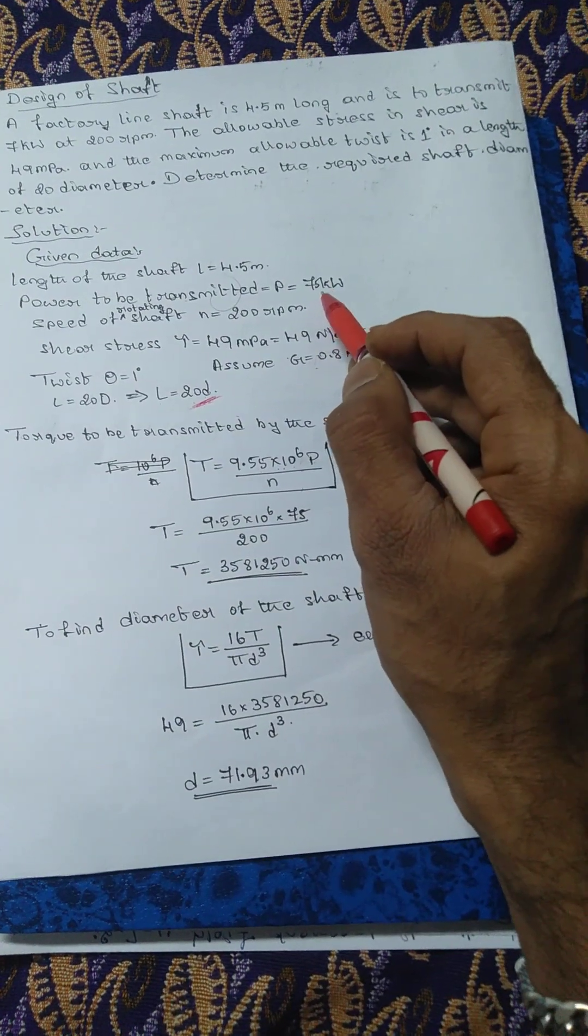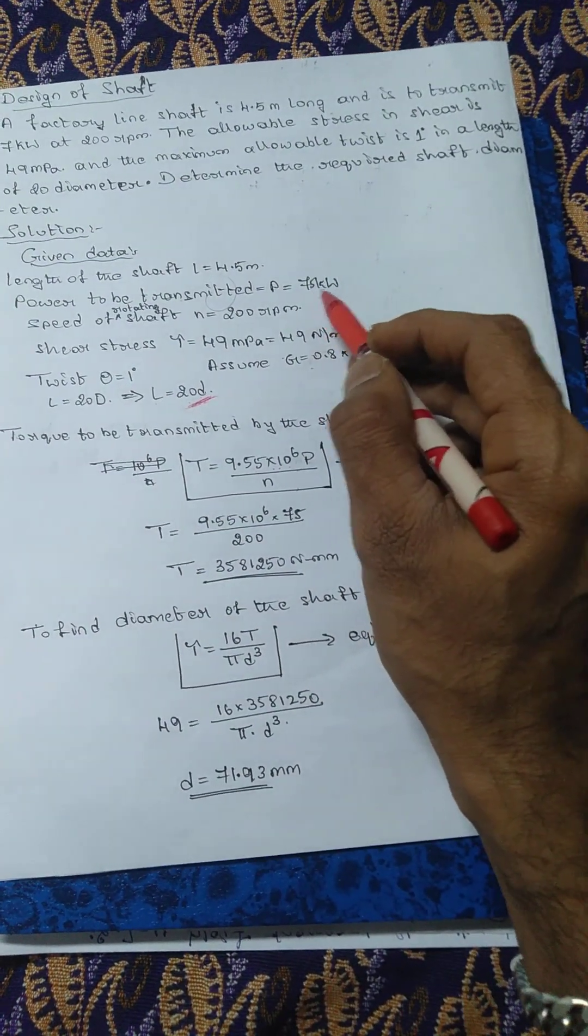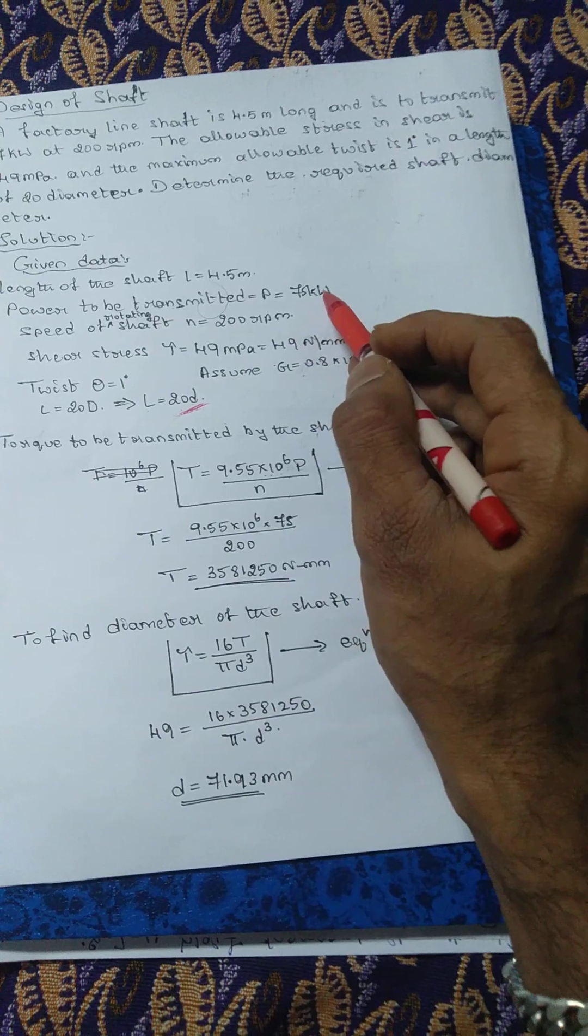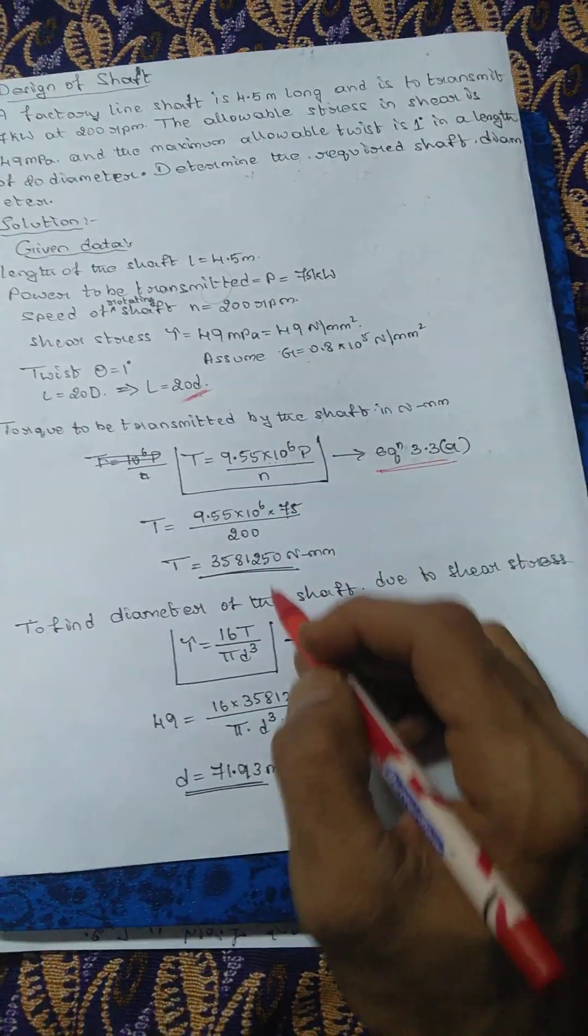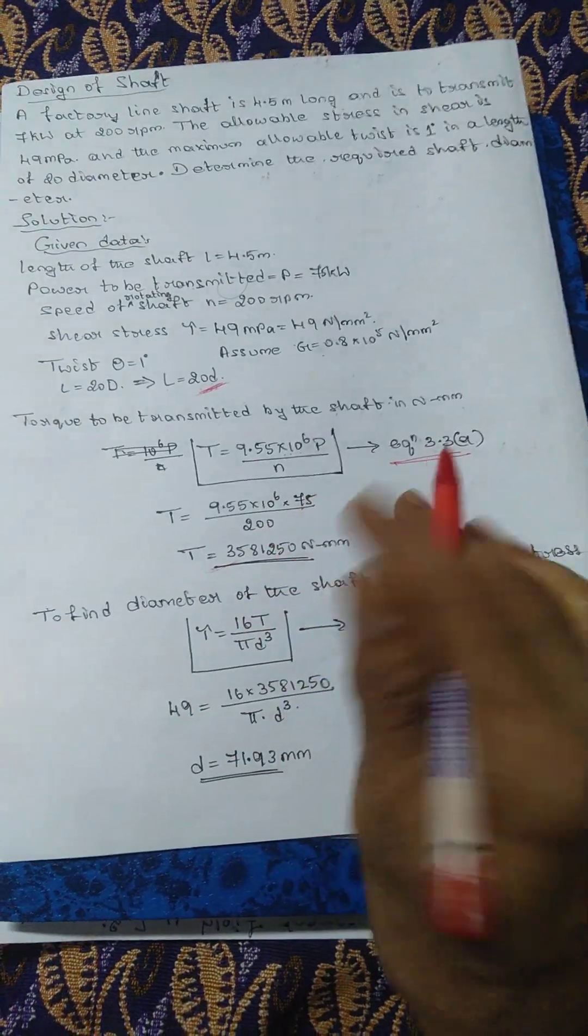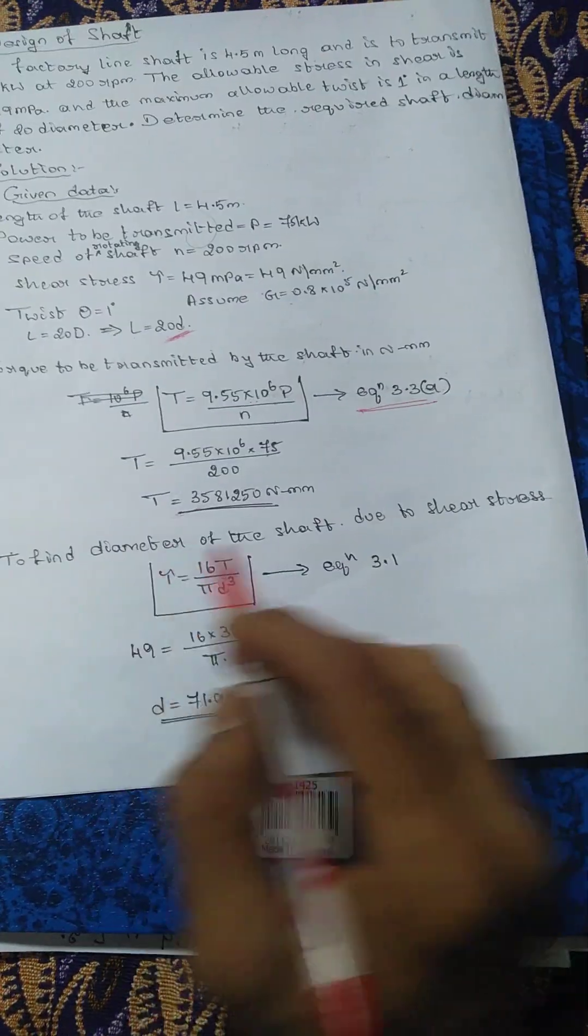P as it is, need not convert into watts, need not multiply by 10 to the power 3, so directly write the number as it is. Next, n also same, 200. So you will get this value of torque.